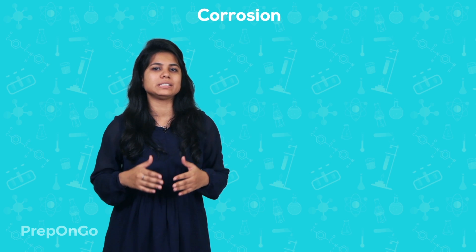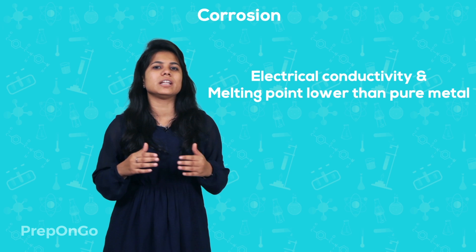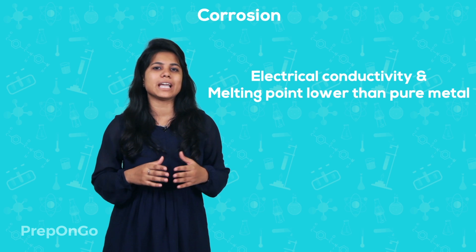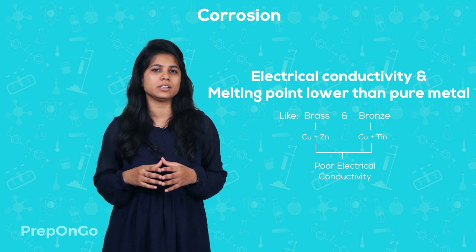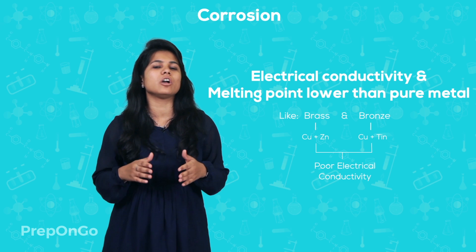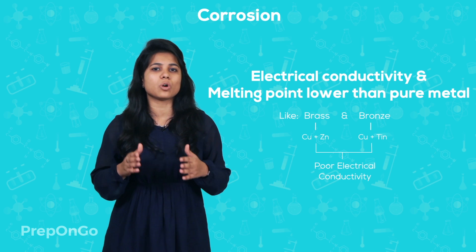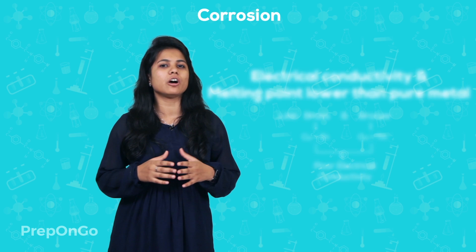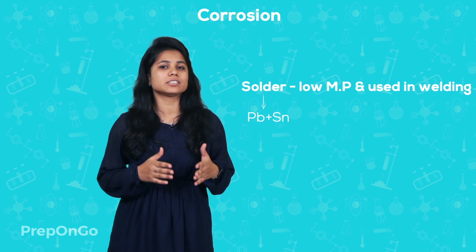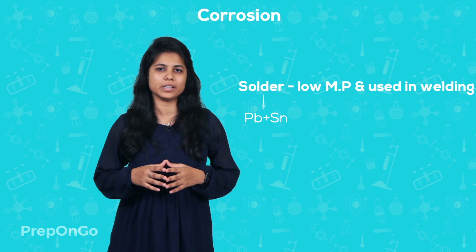When we talk of properties like electrical conductivity and melting point of alloys, these are lesser than those of pure metals. For example, brass, an alloy of copper and zinc, and bronze, an alloy of copper and tin, are poor conductors of electricity, whereas we use pure copper in making wires. Solder, an alloy of lead and tin, has a very low melting point and is used in welding electrical wires.